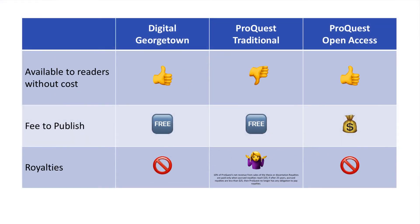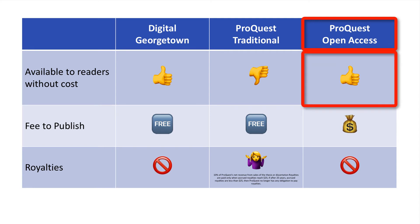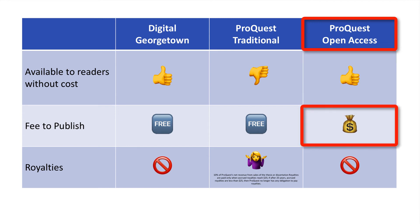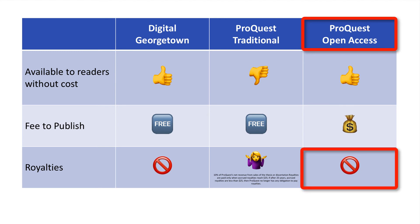Your second option with ProQuest is PQDT Open. If you choose Open Access Publishing, the full text of your work will be freely available to anyone with internet access to view, download, or print through PQDT Open. There is a $95 fee that you must pay to ProQuest, and you will receive no royalties from those who use your work.